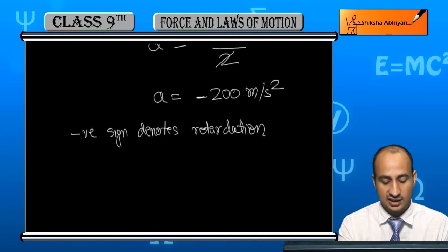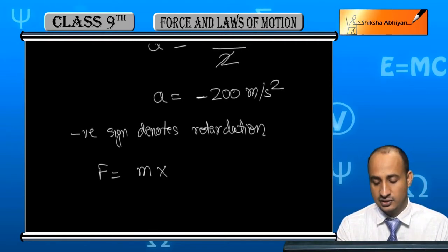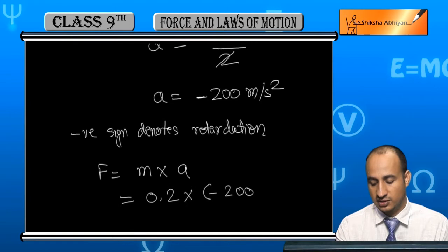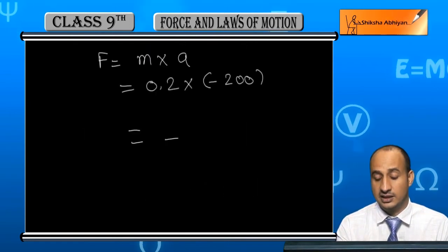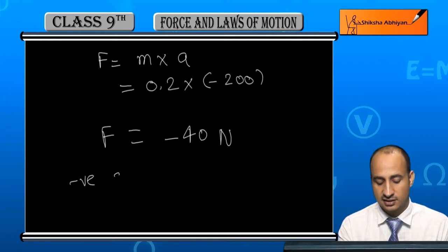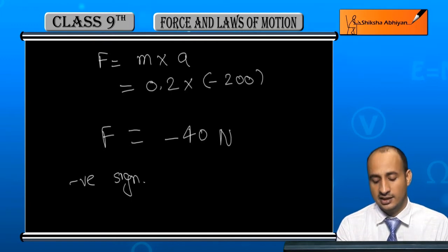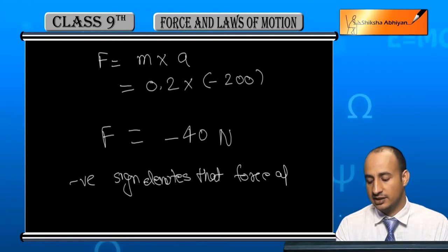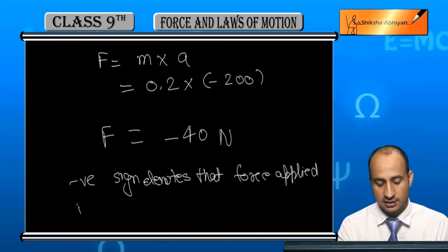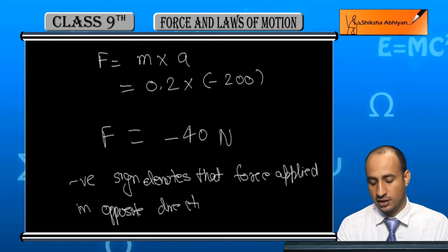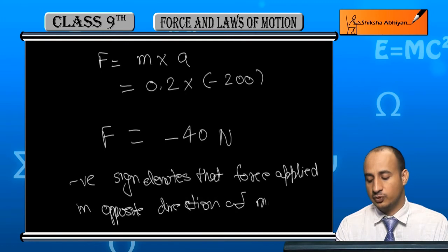Now we calculate the force: F equals M times A. Mass is 0.2 kg, acceleration is minus 200 meters per second squared. So F equals 0.2 times 200 equals minus 40 Newton. The negative sign denotes that the force applied is in the opposite direction of motion.